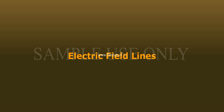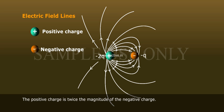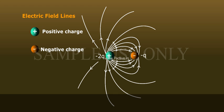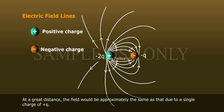The positive charge is twice the magnitude of the negative charge. Two lines leave the positive charge for each line that terminates on the negative charge. At a great distance, the field would be approximately the same as that due to a single charge of positive Q.